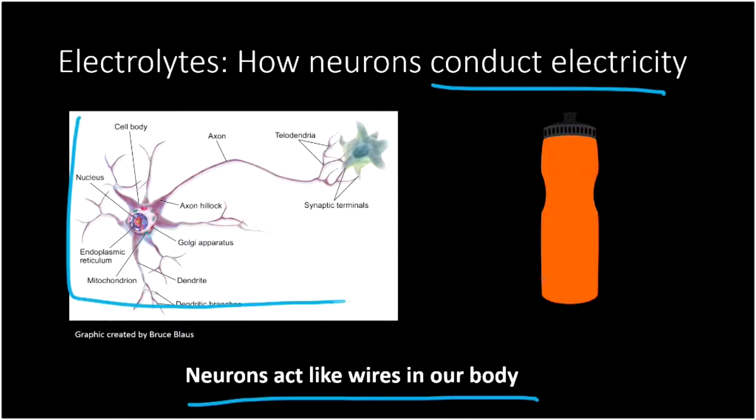So here's a picture of a neuron. And don't be overwhelmed by all these details. You don't need to know that. Neurons just act like wires in our body. And you can even kind of see that this long, thin line here called an axon is sort of like a wire. And it carries that electrical signal with electrolytes. Let's talk about what electrolytes are so we can understand why they would be able to conduct electricity.